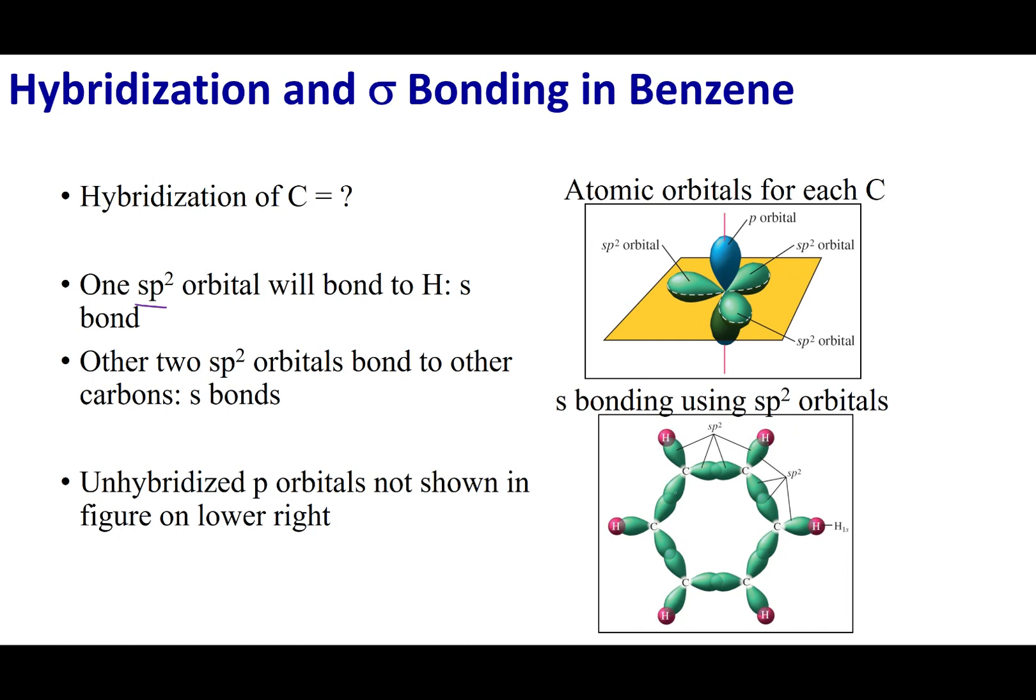And so what you'll see is that there are sp2 orbitals that are overlapping like so. Now, this is going to form a bond between each one of these carbons, giving the skeletal structure of the molecule. We'll also see that the s orbital overlaps with one of these sp2 orbitals.